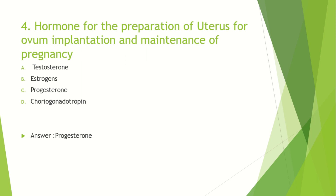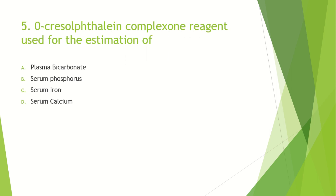Orthocresolphthalein complexone reagent is used for the estimation of: Option A: Plasma Bicarbonate. Option B: Serum Phosphorus. Option C: Serum Iron. Option D: Serum Calcium. The answer is Serum Calcium. The Clarkson-Colib method is the calcium estimation method. Orthocresolphthalein complexone method is specifically used for serum calcium.